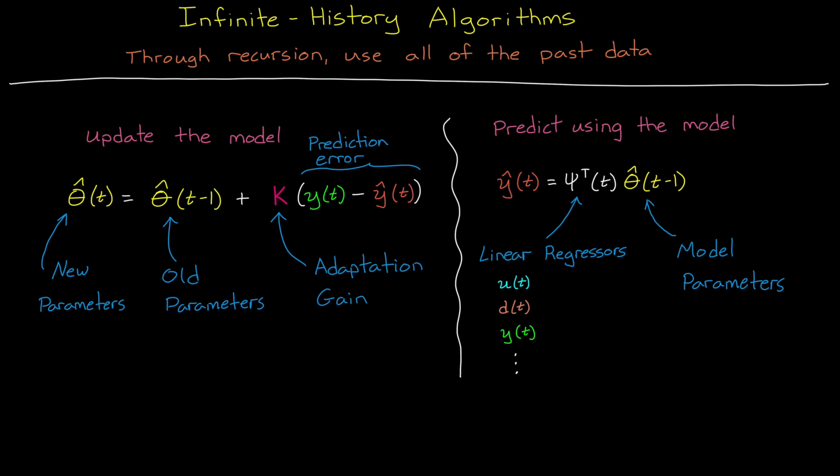In this way, every past data point has impacted the solution in some way, since this is a recursive algorithm. Therefore, the result is always a combination of all of the past values, hence infinite history.